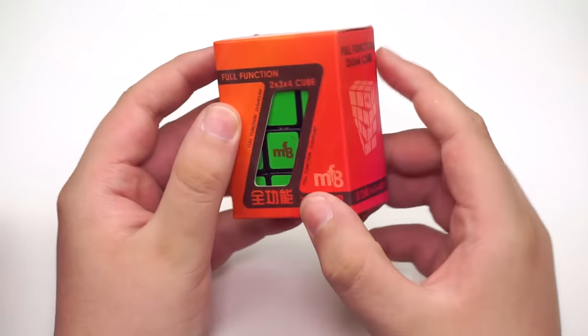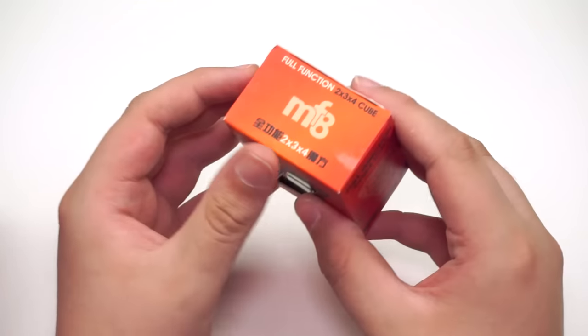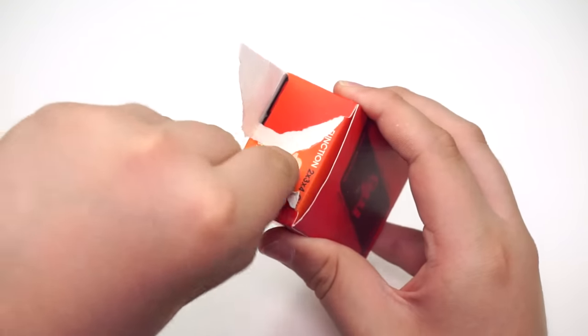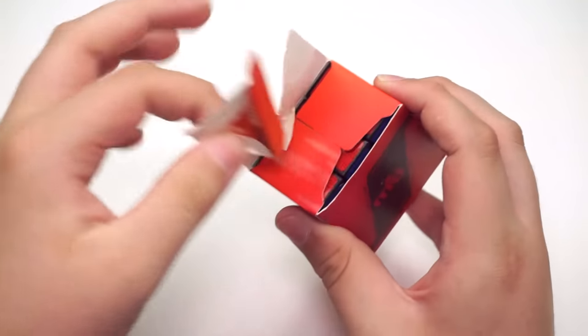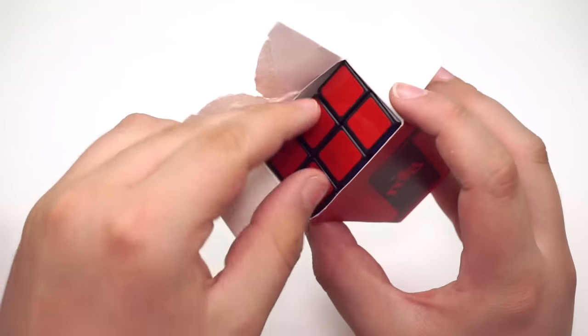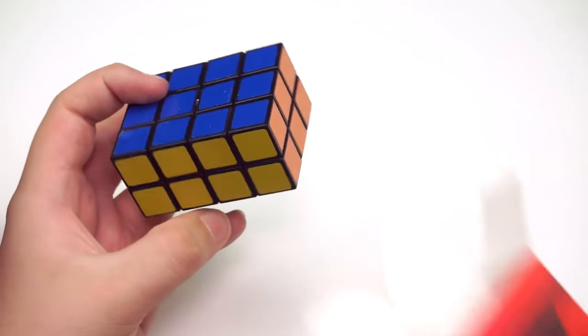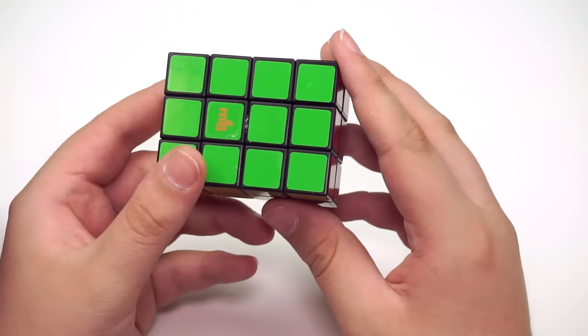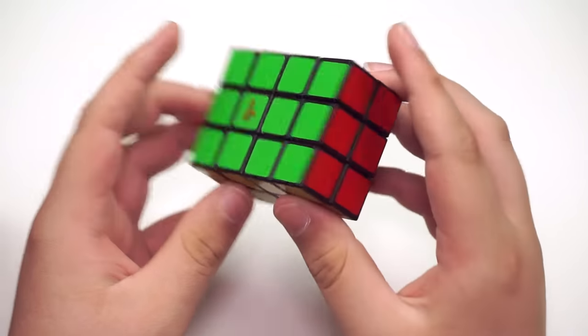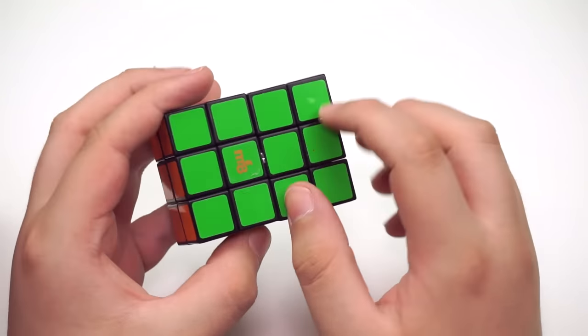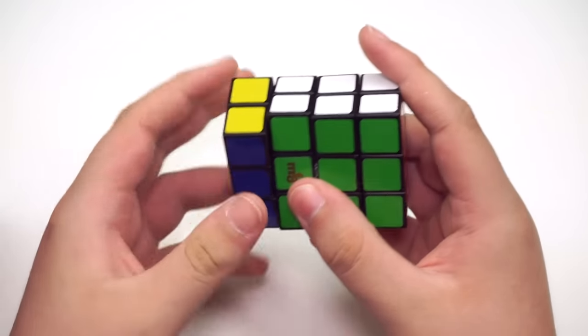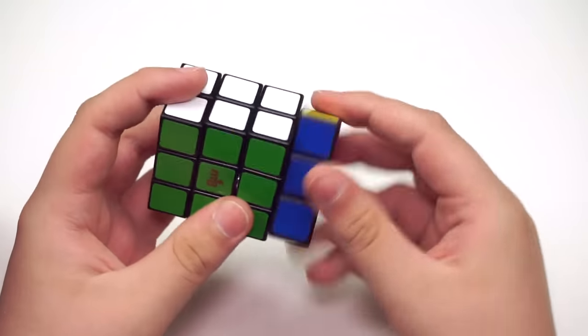Since I got the 3x4x5, I also had to get its little brother, the 2x3x4. When these first came out, there was actually a problem with the mechanism. There was internal bandaging going on after you had shapeshifted it. MFA claimed that this was part of the design, however, it obviously wasn't. They didn't have to deal with the problem, but eventually they addressed it. Now the mechanism has been fixed.